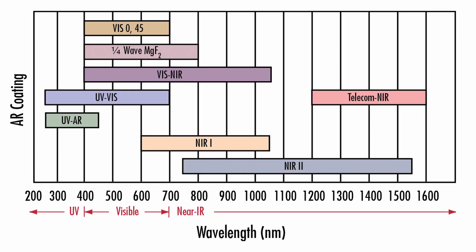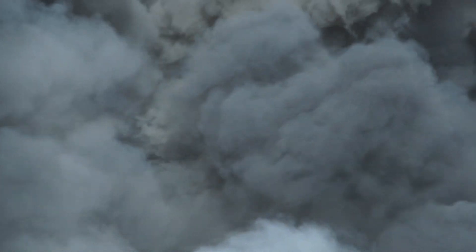Another thing is the coatings on the elements. In a lens designed for infrared wavelengths, the elements will have coatings specifically designed not to reflect in the IR. This will allow you to have greater transmission, so when you're seeing something faint — like something through smoke — you'll be able to collect all the light that you need.